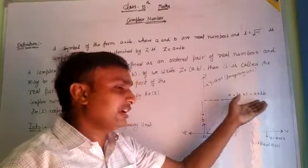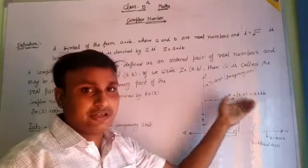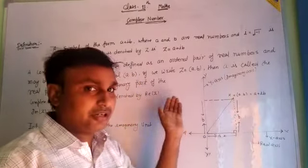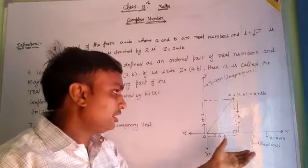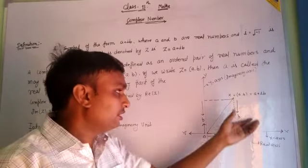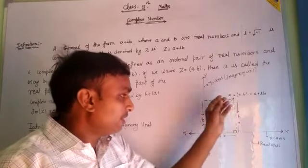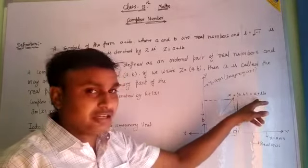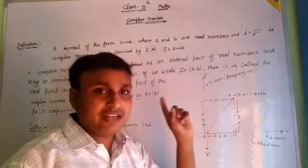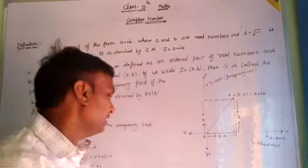So every point in the plane is a complex number. These points lie on the first, second, third, or fourth coordinate quadrant — so every point in a quadrant is also a complex number.